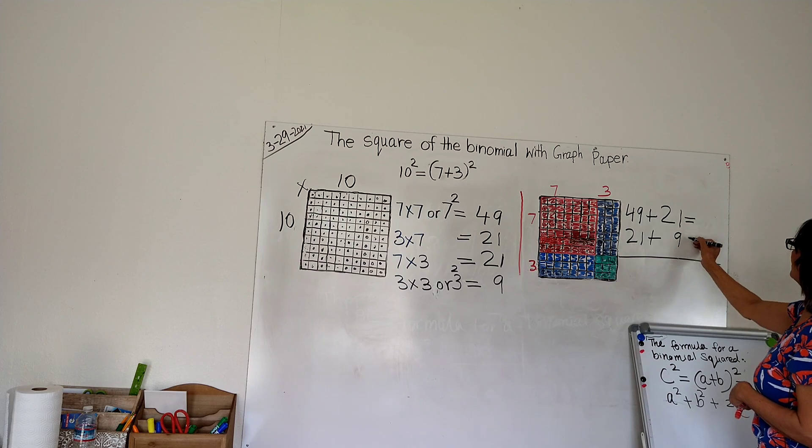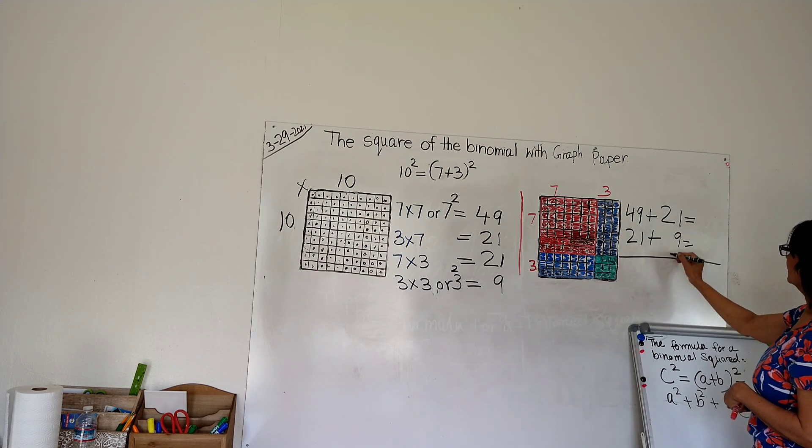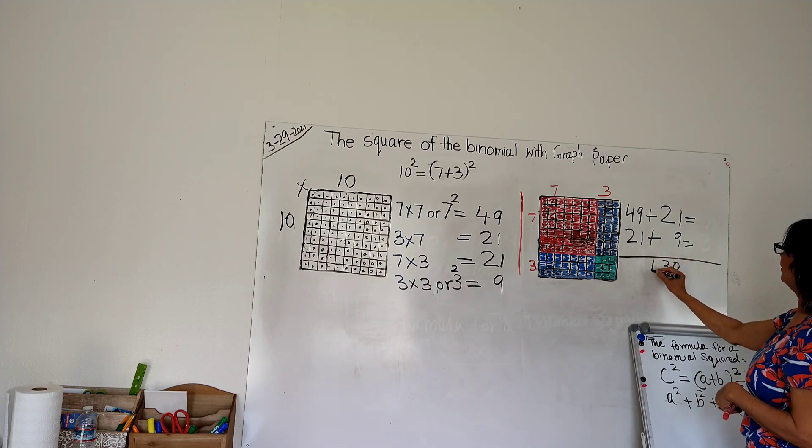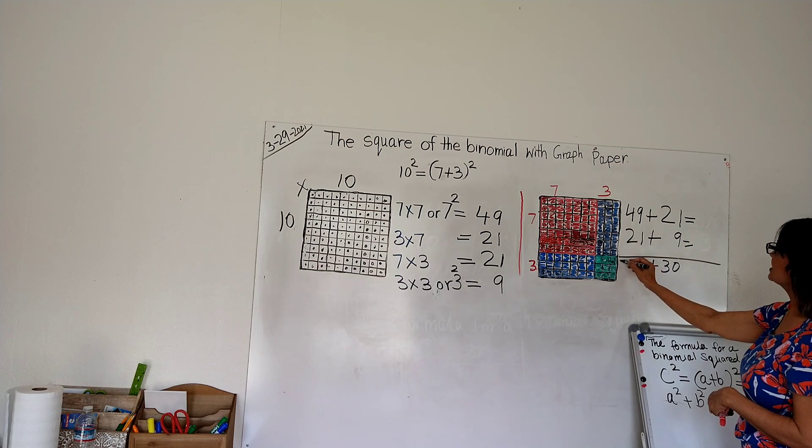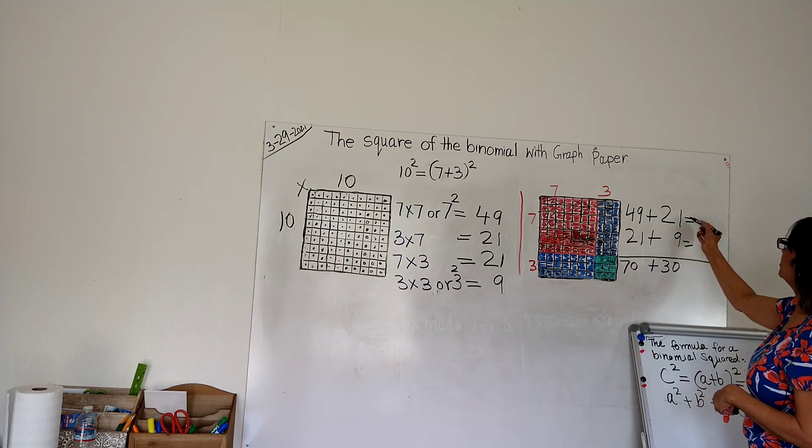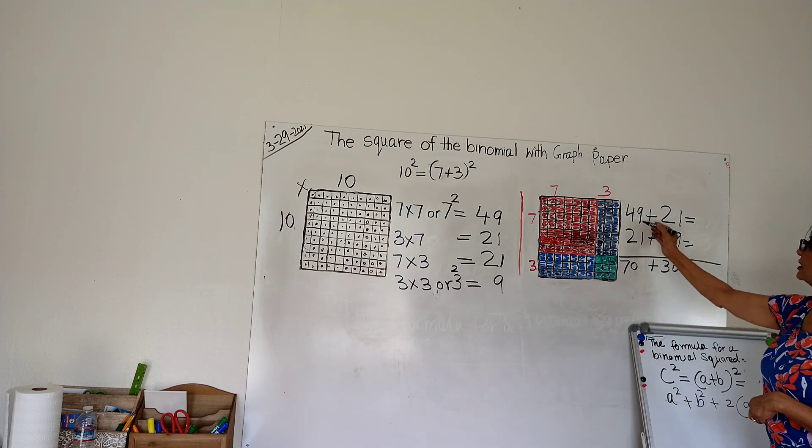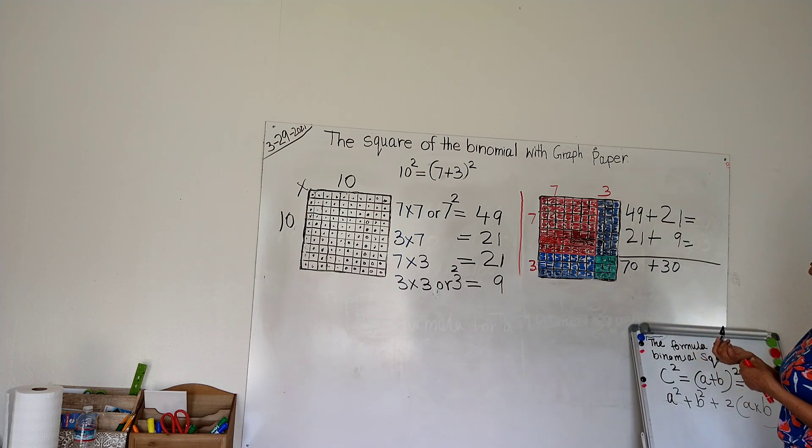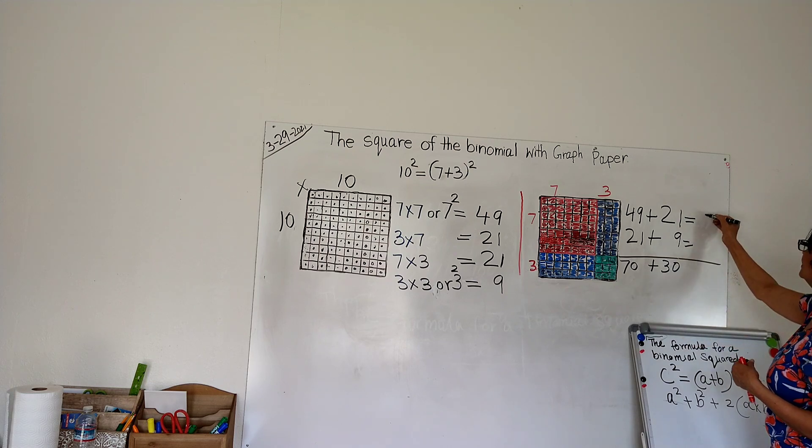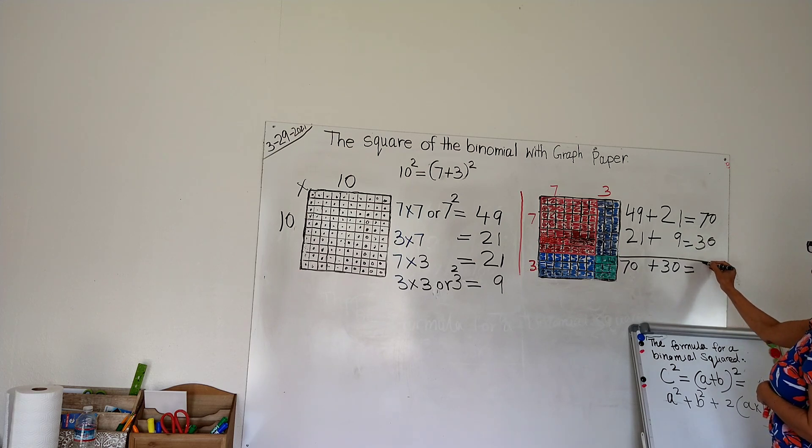We have the square of 3: 3 times 3 equals 9. So let's do addition here. We have 30 plus 70. When we add them up: 21 plus 9 is 30, and then 49 plus 21 is 70. So we have 70 here and 30 here equals 100.